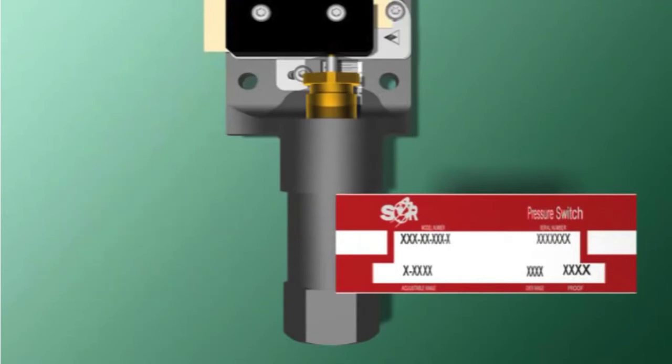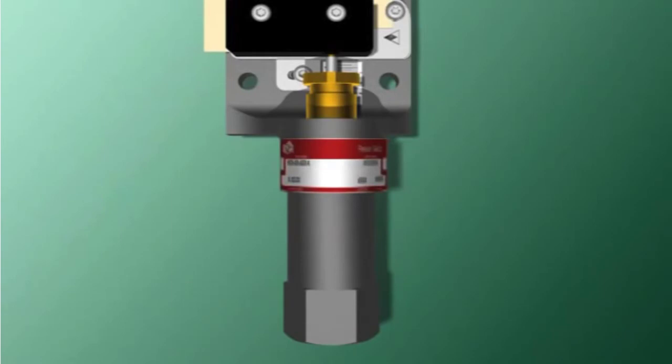The metal tag is permanently attached to the housing, not the cover. This way, all the vital information stays with its switch and can't end up on another unit after routine plant maintenance.